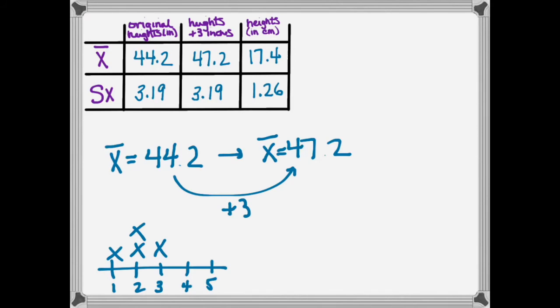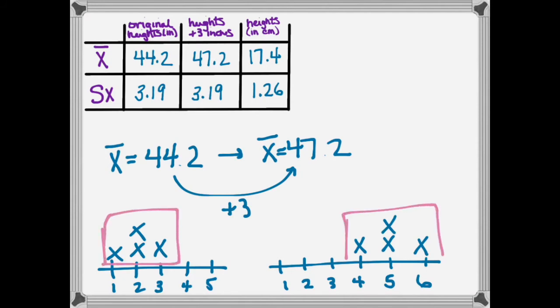I would take each value in the original and move it up three points on the number line. The one would add three and go to four. The twos would add three and go to five. The three would add three and go to six. You'll notice that the relationship between the numbers didn't change. All of these things are just as close together in the original as they were in the new one when we added. So the standard deviation isn't going to change because the relationship between the numbers hasn't changed.